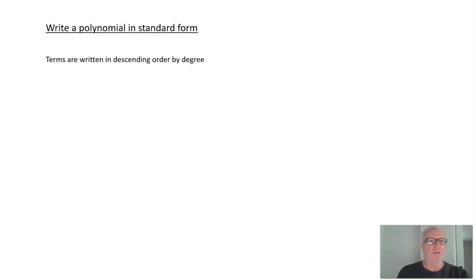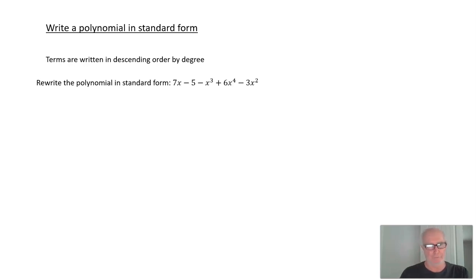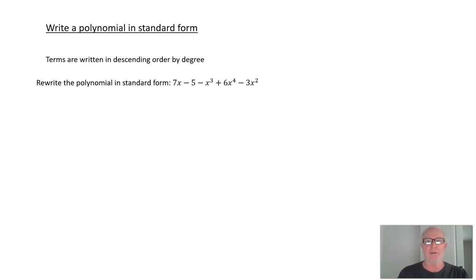Next we want to be able to write a polynomial in standard form. In standard form, the terms are written in descending order by degree. So we want to rewrite this polynomial in standard form: 7x − 5 − x³ + 6x⁴ − 3x².